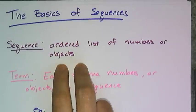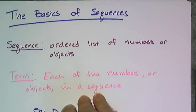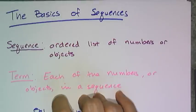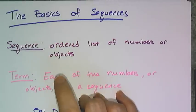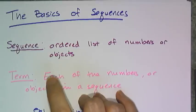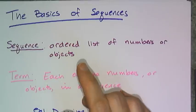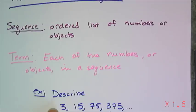First and foremost, a sequence is defined as an ordered list of numbers or objects. And a term is each of the numbers or objects in the sequence. In class, the objects were different stages of Sierpinski's triangle and then we turned some of the information in Sierpinski's triangle into a number sequence like this one.